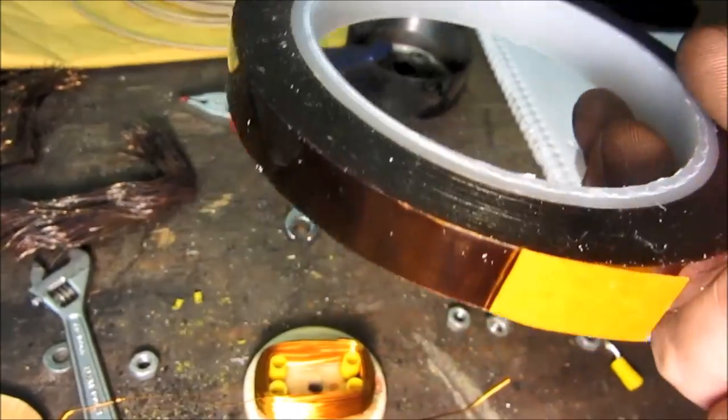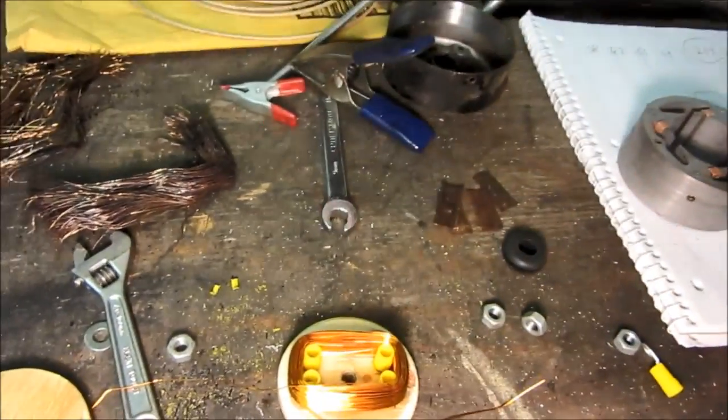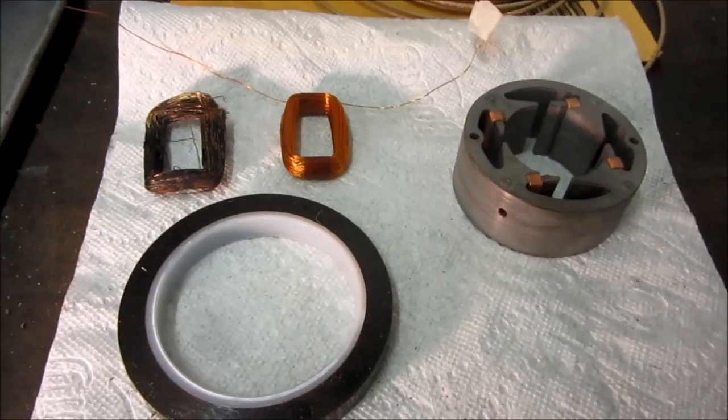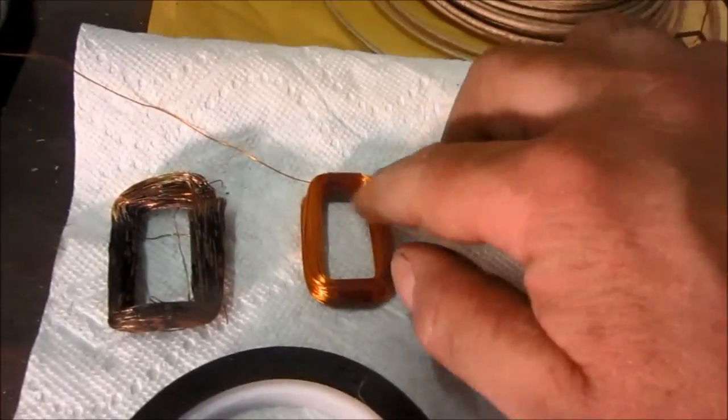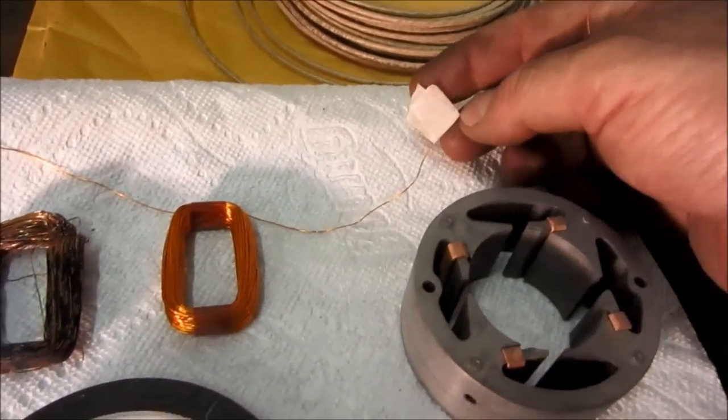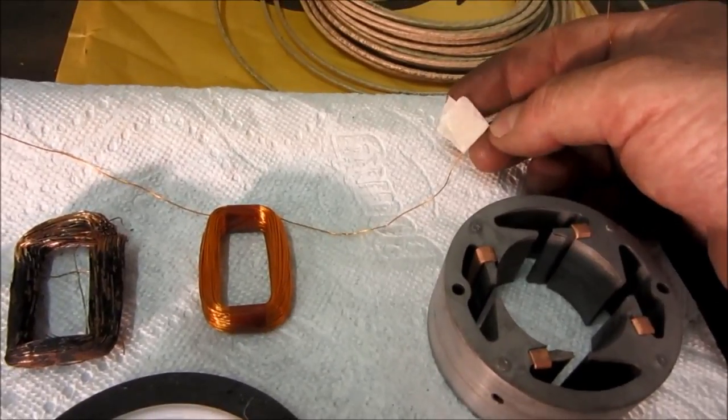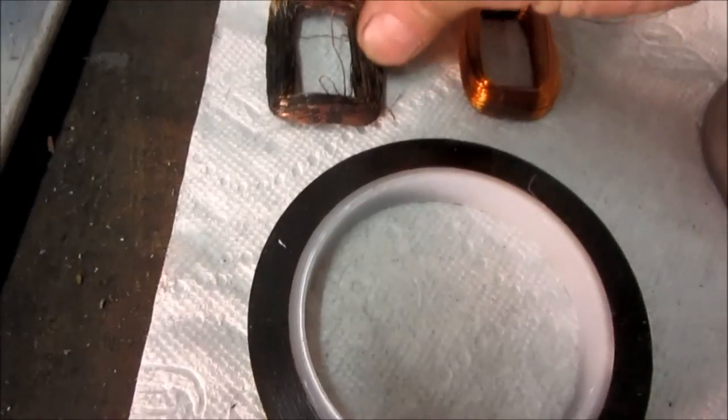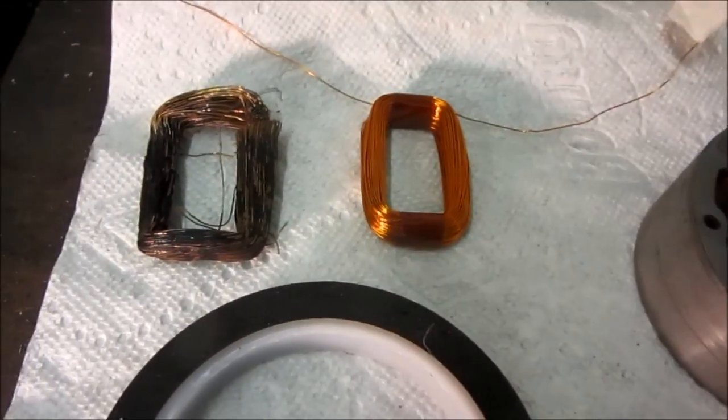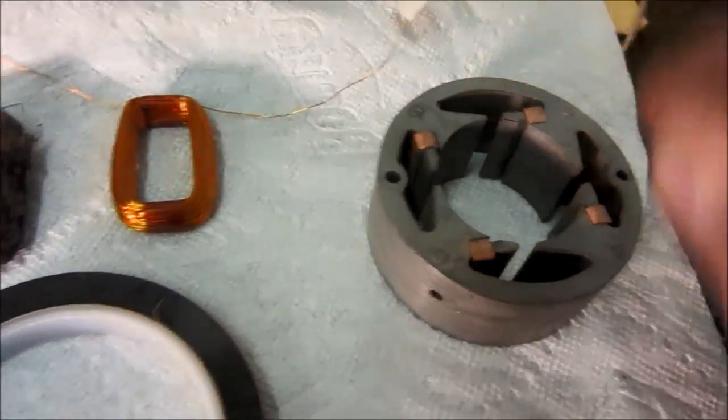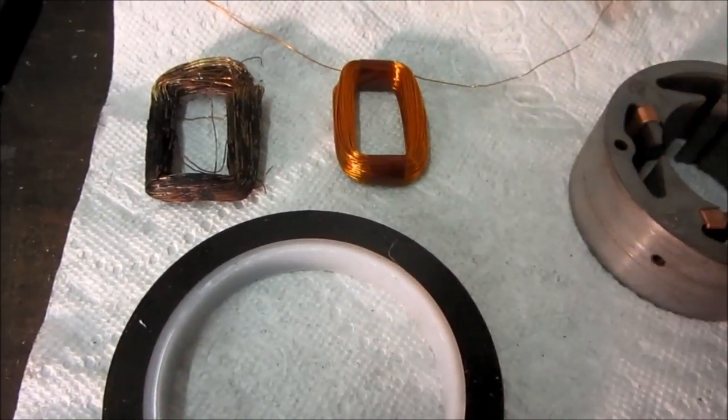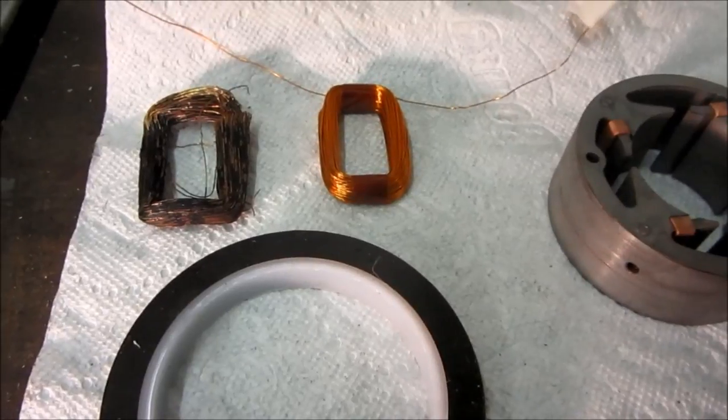This tape is Capton, they call it. It's a high-temperature tape, it's designed for this purpose. There's one coil done. I marked the start of the coil there to help me with the polarity. The old one looks a little smaller, we'll have to see how tough it is to get it in there in the end. Because this is flexible and not bonded together, it shouldn't be that hard, but time will tell.